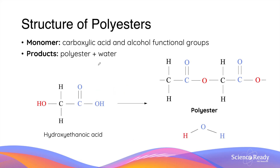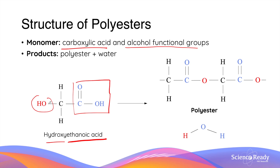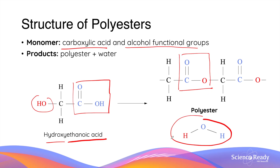Polyesters can also be formed from monomers that contain both a carboxylic acid and an alcohol functional group in the same molecule. Hydroxyethanoic acid is an example of this. The presence of both functional groups on each end of the molecule allows the polymer chain to be extended on both ends by forming an ester bond. Every time an ester functional group is formed, a water molecule is also produced as a byproduct.